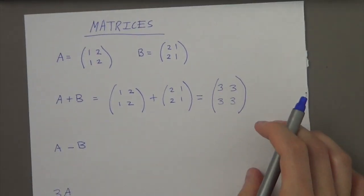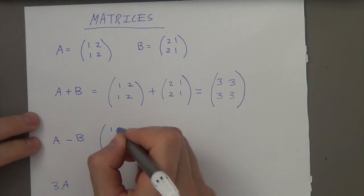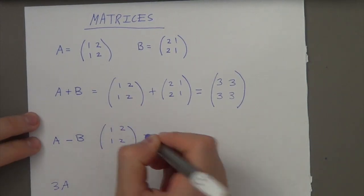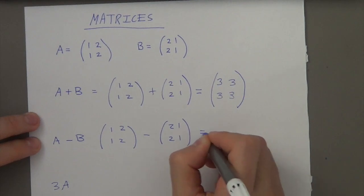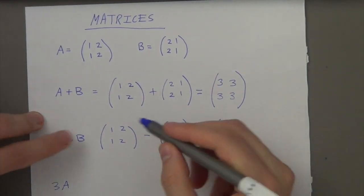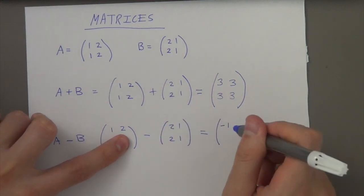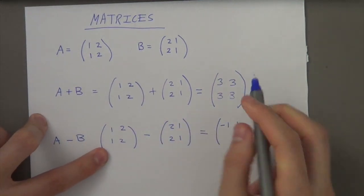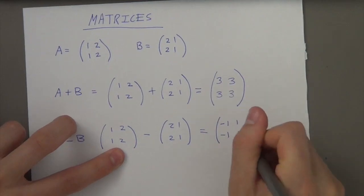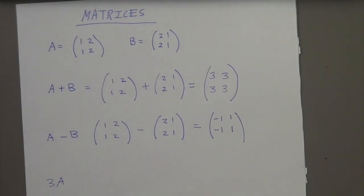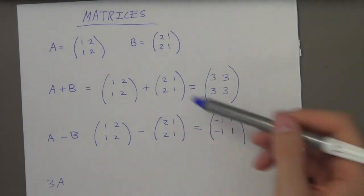It'll be as simple as that. What about A minus B? So 1 minus 2 is minus 1, 2 minus 1 is 1, 1 minus 2 is minus 1, 2 minus 1 is 1. And it works the same for a 3 by 3 matrix as well — the same principle.